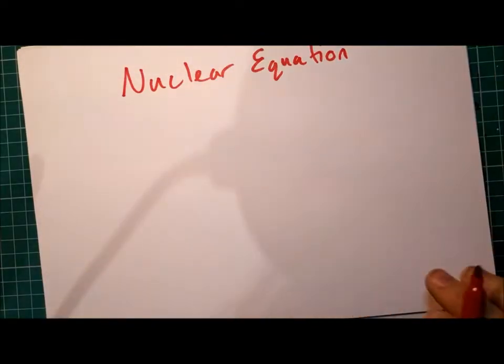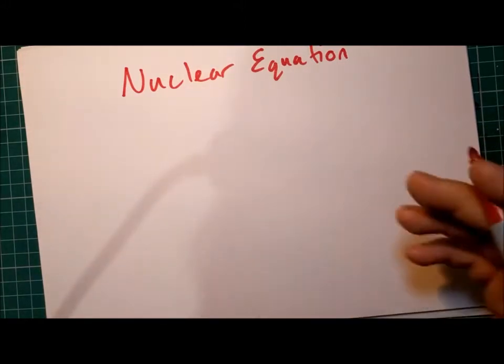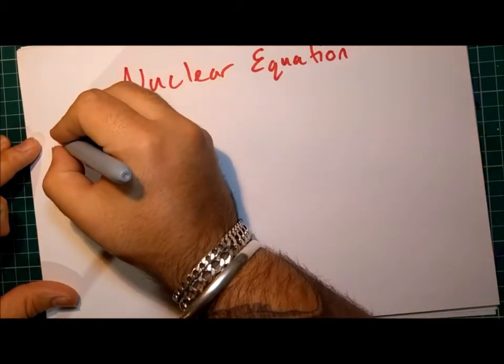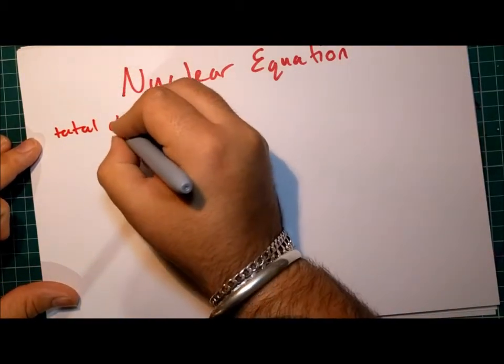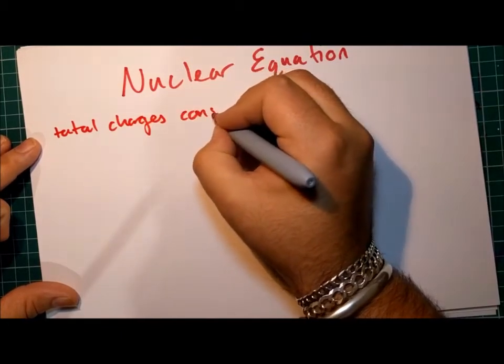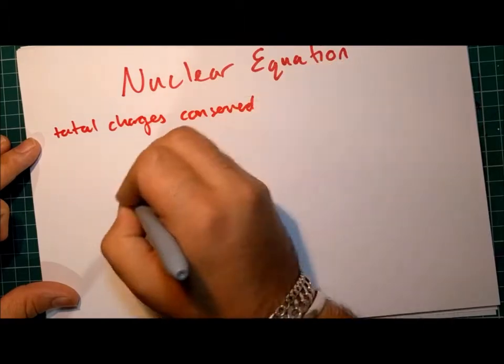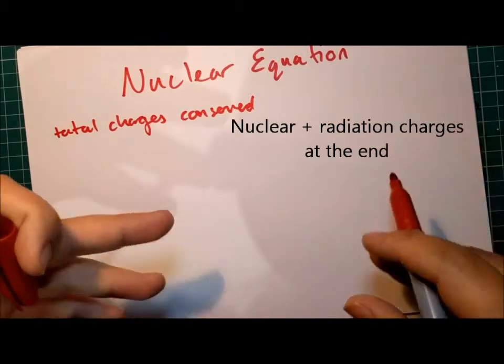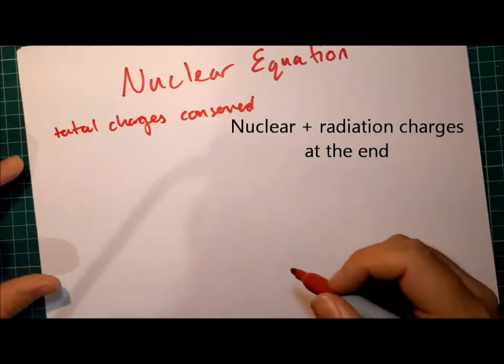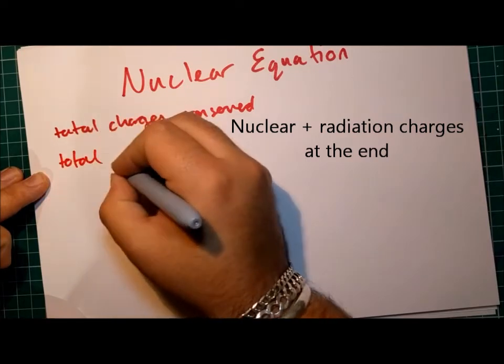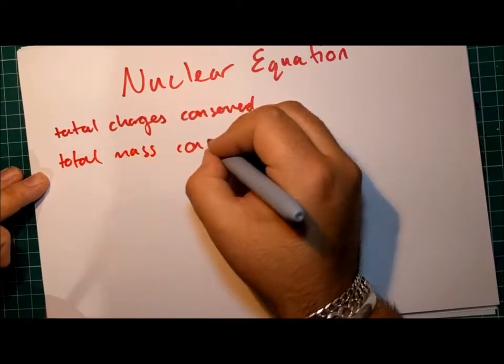There's two main rules to remember. It makes it a lot easier to keep track of what changes will happen for a given type of emission. And those two rules are that the total charges are conserved. As well as that, the total mass is conserved as well.